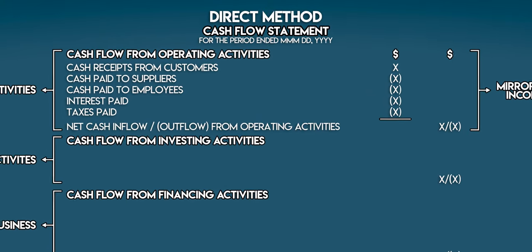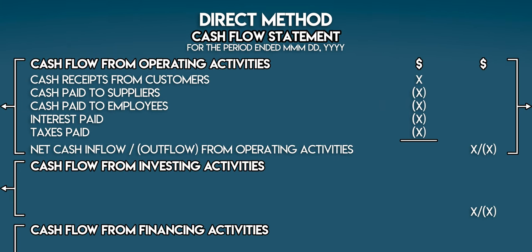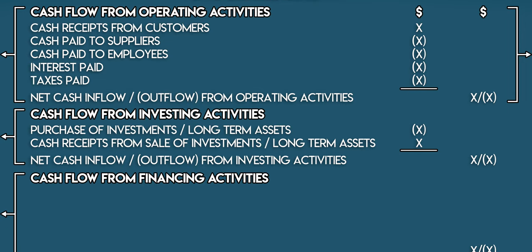At the top we have cash receipts from customers, which mirrors revenue, and then we have the cash paid out to suppliers and employees, and then interest and taxes paid — collectively these mirror the business's expenses. Cash flow from investing activities includes cash outflows from buying investments or other long-term assets and the cash inflows that come with selling them.